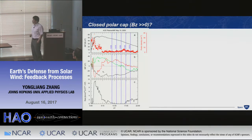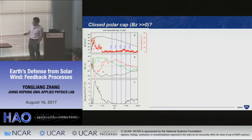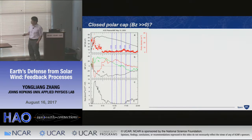Now considering northward IMF — what does the cusp look like? For a special case with strongly northward IMF (Bz up to +20 to +30 nT), using the Newell coupling function to calculate reconnection rate: during southward IMF the reconnection rate is very high, but after four or five hours of strongly northward IMF, the reconnection rate goes to almost zero. What happens to the aurora under this condition?